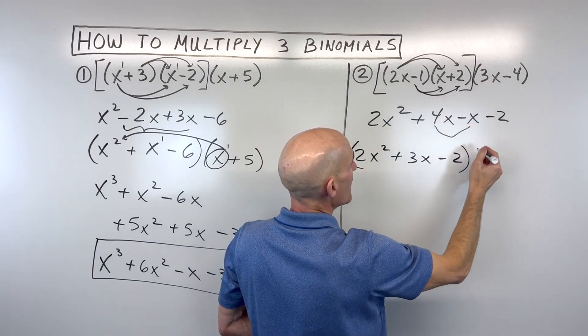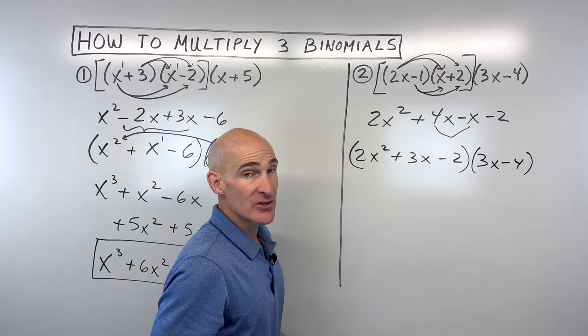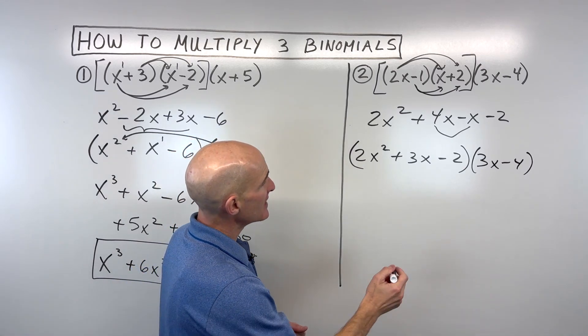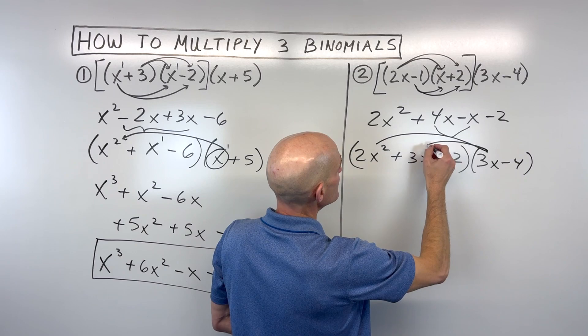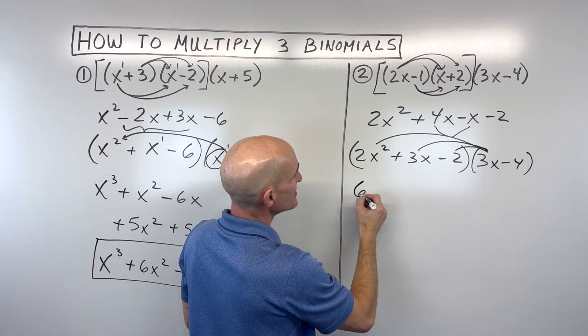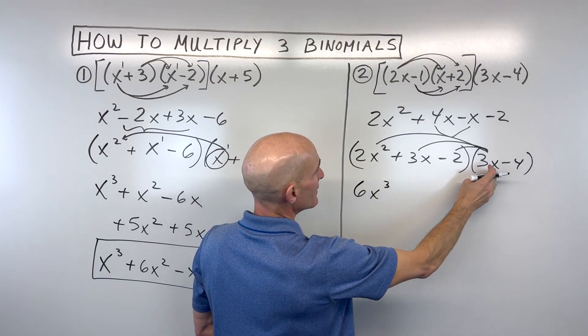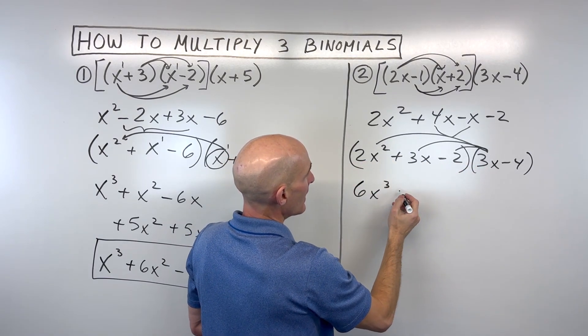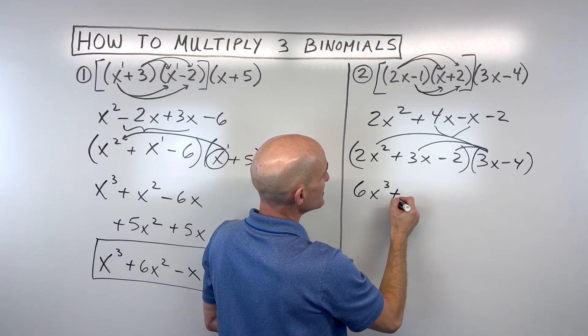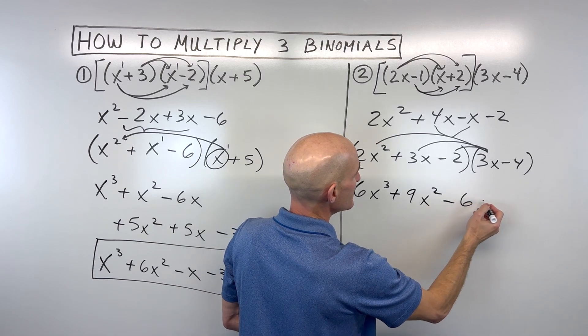And then that's all multiplied by this binomial here, 3x minus 4. And so how would you multiply that? Well, let's take the 3x, and we're going to multiply it by all three of these terms. So 3x times 2x squared is going to give us 6x cubed. Again, you're multiplying the coefficients together and then the variables together. And then now 3x times 3x gives us 9x squared. 3x times negative 2 is negative 6x.